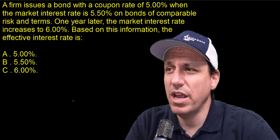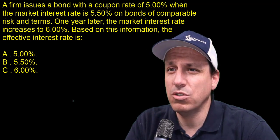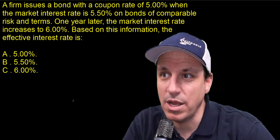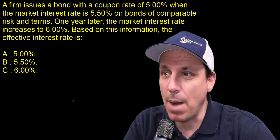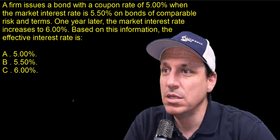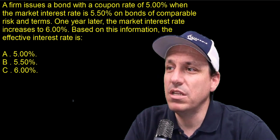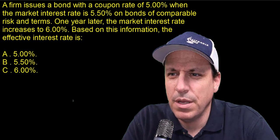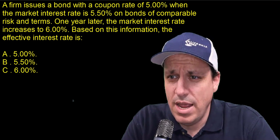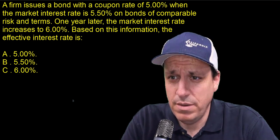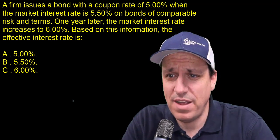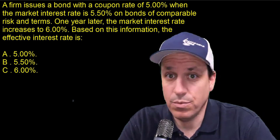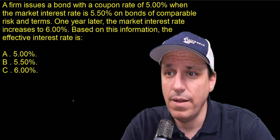One year later, the market interest rate increases to 6%. Based on this information, the effective interest rate is either A, 5%, B, 5.5%, or C, 6%. It's one of the three, right?